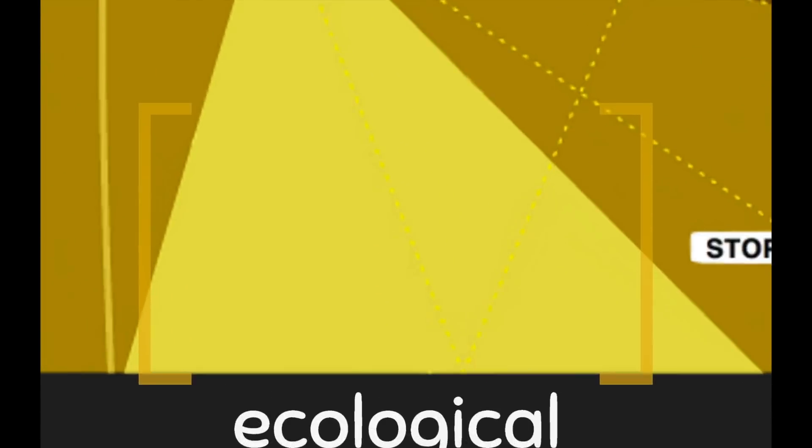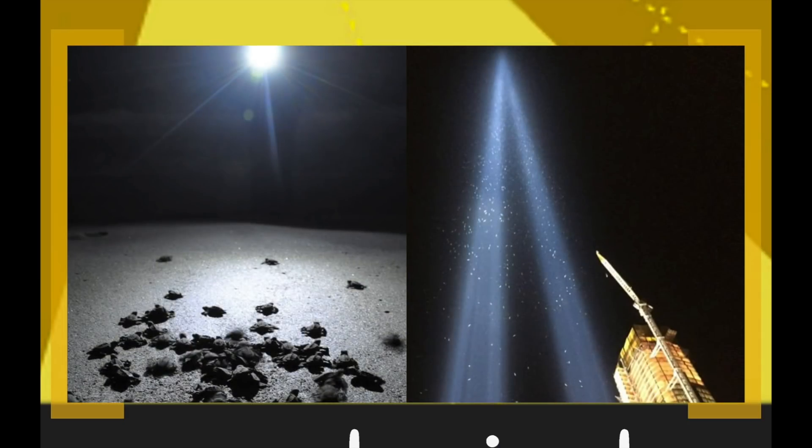You've probably heard of some examples of this. For example, baby sea turtles often get lost on their way to the ocean distracted by local sources of light, and birds can get trapped in columns of light.